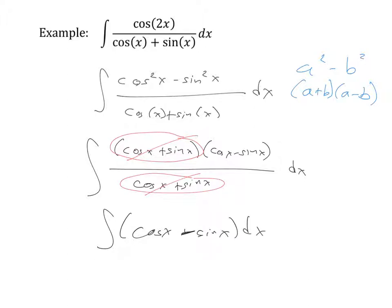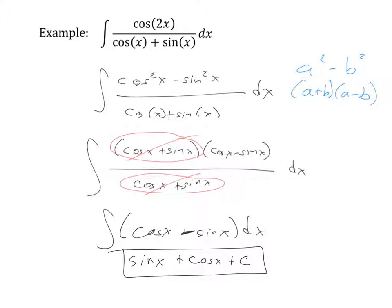All we're left with is the antiderivative of cosine x minus sine x dx. What I like about this problem is that it doesn't even utilize u substitution. The identity broke this thing down into a combination of two very simple trigonometric functions whose antiderivatives we know. The antiderivative of cosine x is sine x, and the antiderivative of negative sine x is plus cosine x, giving us a constant of integration. So the double angle formulas can change a double angle into single angles that allow us to cancel other factors.